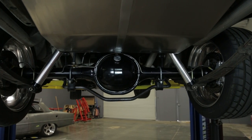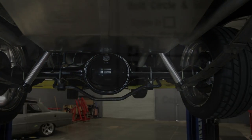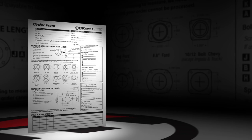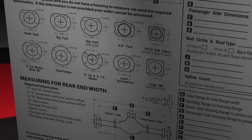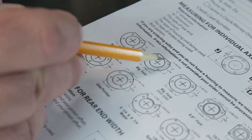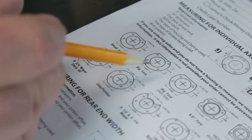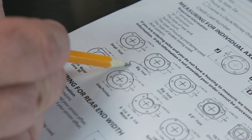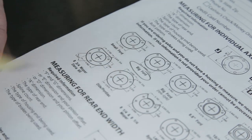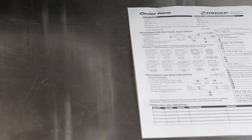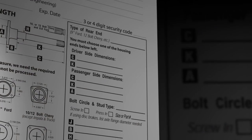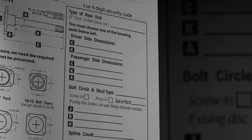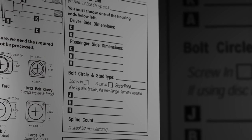Ordering a custom axle housing from Mosier Engineering is as easy as downloading the order form, taking some measurements, and answering a few questions. Done correctly, it ensures you'll get exactly what you need, but it requires a bit of attention to detail. We'll take you through the process of filling out the Mosier order form step by step.